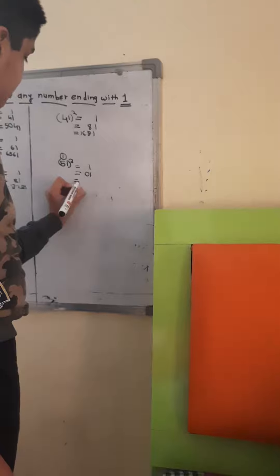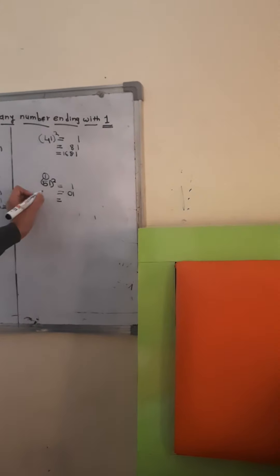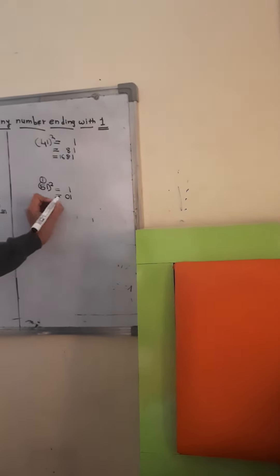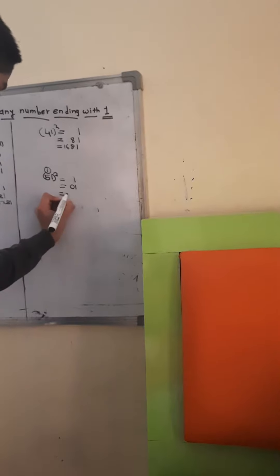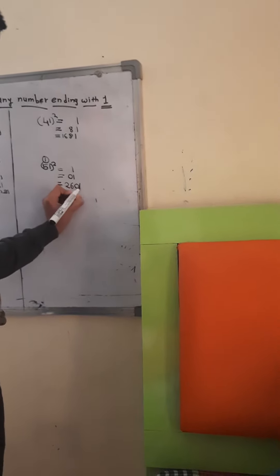And then, when we do this, then we have to find the 5 square, which is 25, plus 1, 26, and then the 0, 1.